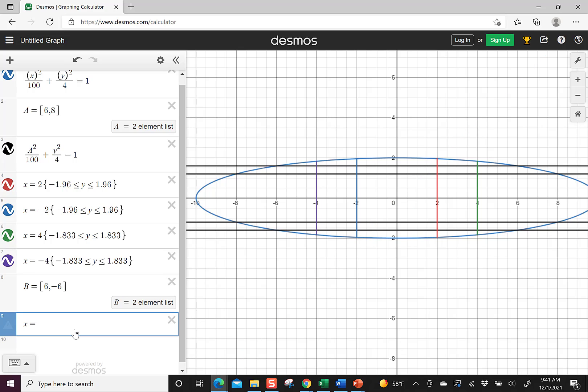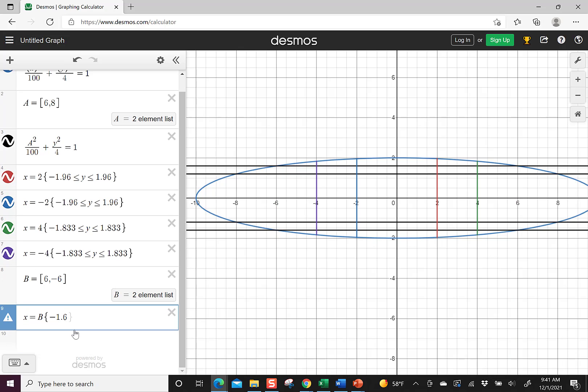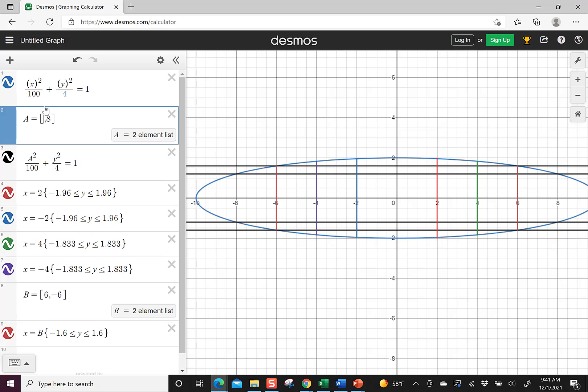And I'm going to write x is equal to capital B. Immediately it puts in two vertical lines, and then I can tell it the condition that negative 1.6 is less than or equal to y, which is less than or equal to 1.6. So I saved a little bit of steps there. I only had to do one equation instead of 2. So let's get rid of the 6.